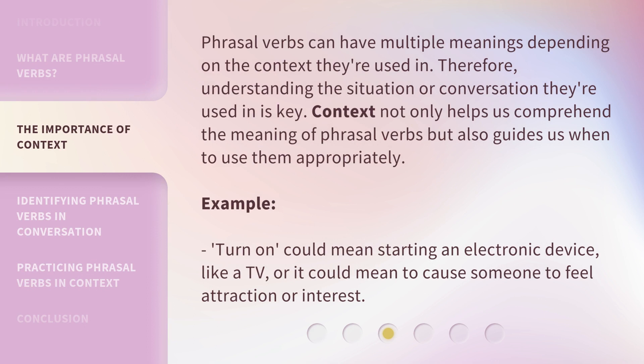Phrasal verbs can have multiple meanings depending on the context they're used in. Therefore, understanding the situation or conversation they're used in is key. Context not only helps us comprehend the meaning of phrasal verbs but also guides us when to use them appropriately. For example, 'turn on' could mean starting an electronic device like a TV, or it could mean to cause someone to feel attraction or interest.